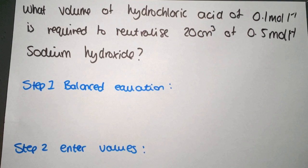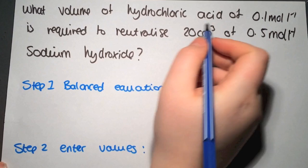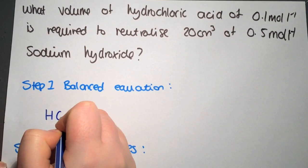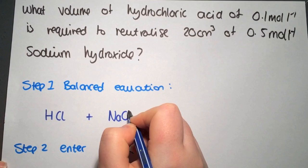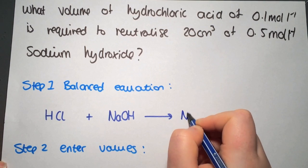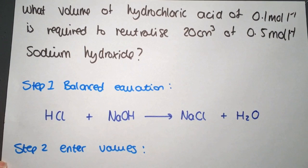The key to all titration calculations is to have a balanced equation before you start. So in this example we are using hydrochloric acid plus sodium hydroxide, and as it's a neutralization reaction we will get sodium chloride plus water. And that equation is already balanced.